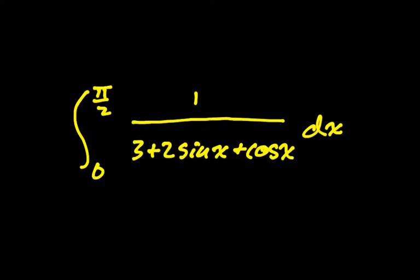In this video we are going to take a look at the integral from 0 to pi over 2 of 1 over 3 plus 2 sine x plus cosine x dx. You look at this type of problem and think, what am I ever going to do? Well, it turns out we can make some substitutions for sine and cosine and turn this into a problem we can do.